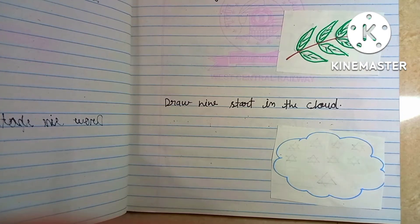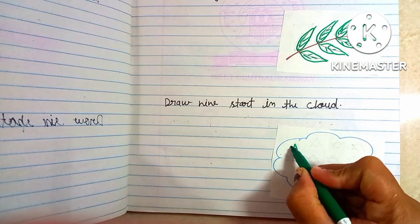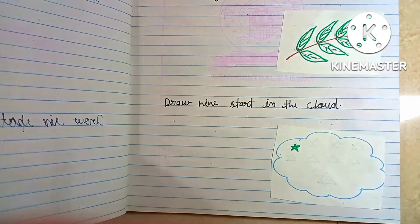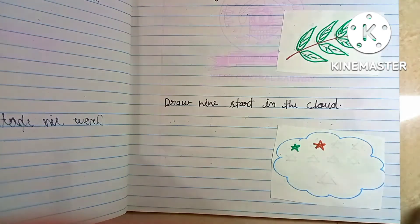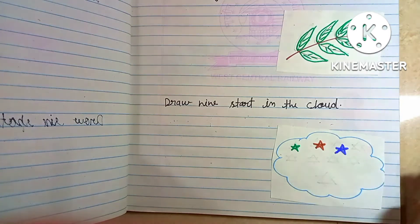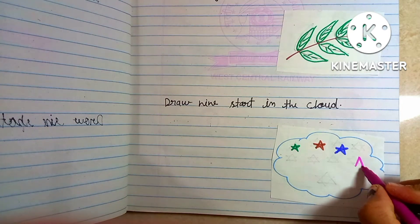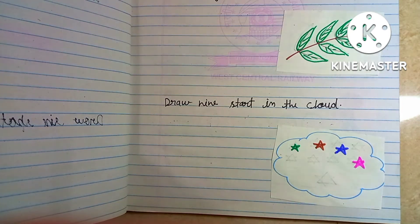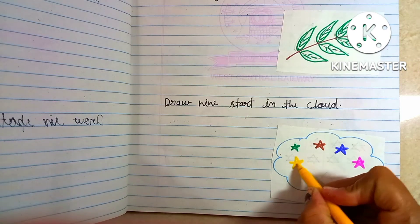Draw nine stars in the cloud. Cloud ke andar mein nine stars draw kerna hai. 1, 2, 3, 4, 5.